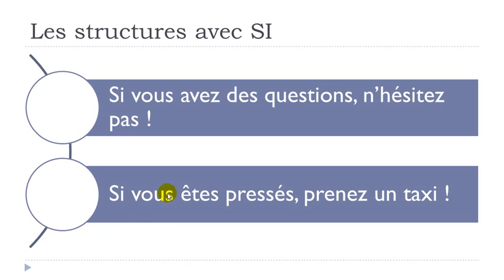Second example: SI VOUS ÊTES PRESSÉ — ÊTRE is 'to be,' PRESSÉ means 'in a hurry' — PRENEZ UN TAXI. Here you have PRENEZ from PRENDRE, 'to take,' and UN TAXI. So remember: SI plus the present form, followed by L'IMPÉRATIF. To summarize for POSSIBILITÉ: either SI plus present followed by the future, or SI plus present followed by L'IMPÉRATIF.